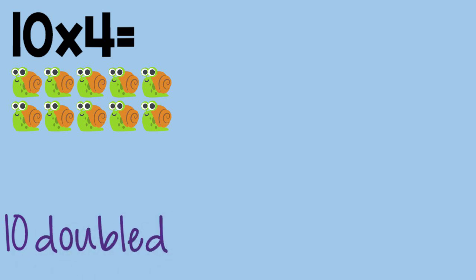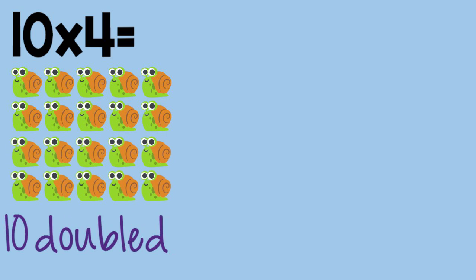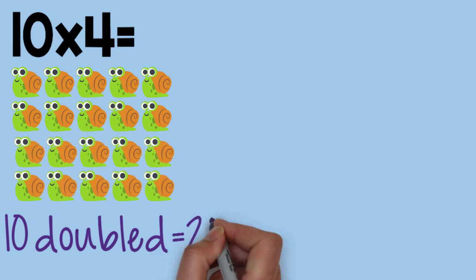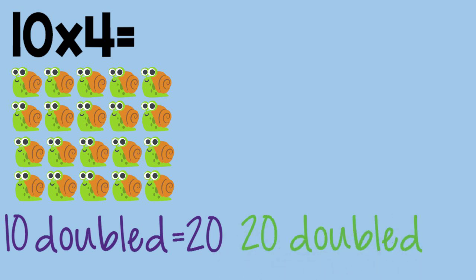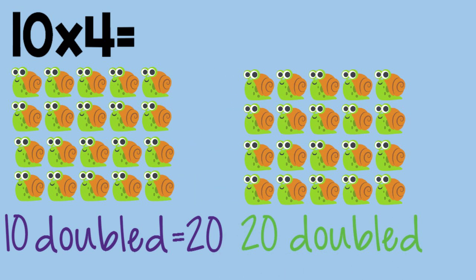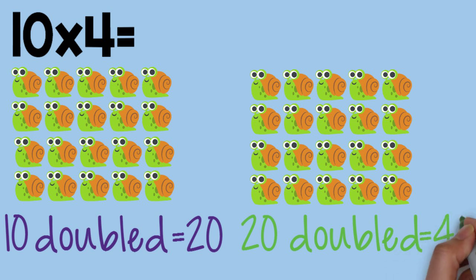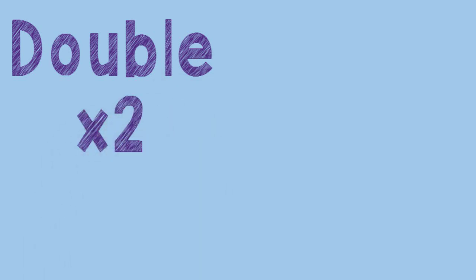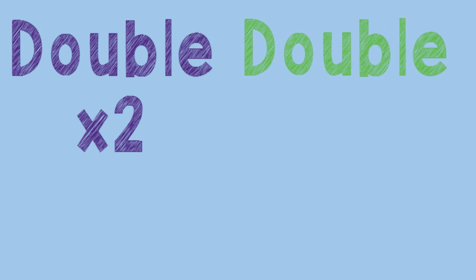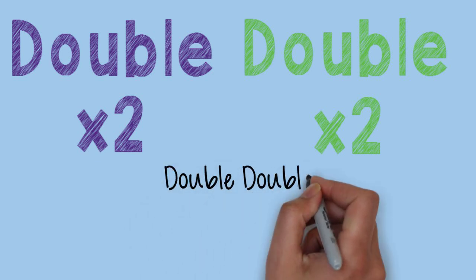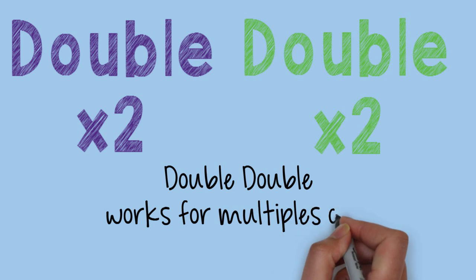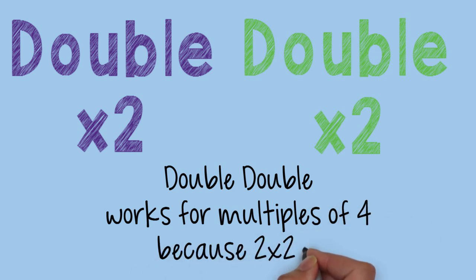Ten doubled equals twenty. Twenty doubled equals forty. So ten times four equals forty. Double double works for multiples of four because two times two equals four.